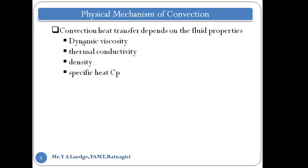Dynamic viscosity is the viscosity of the fluid when we talk about convection. Thermal conductivity is the conductivity of the fluid — just as in conduction the rate of heat transfer depends on the conductivity of the material, here it depends on the conductivity of the fluid. Density of the fluid also affects the heat transfer rate, and specific heat is the heat-holding capacity of the fluid. All four of these parameters affect the convective heat transfer rate.